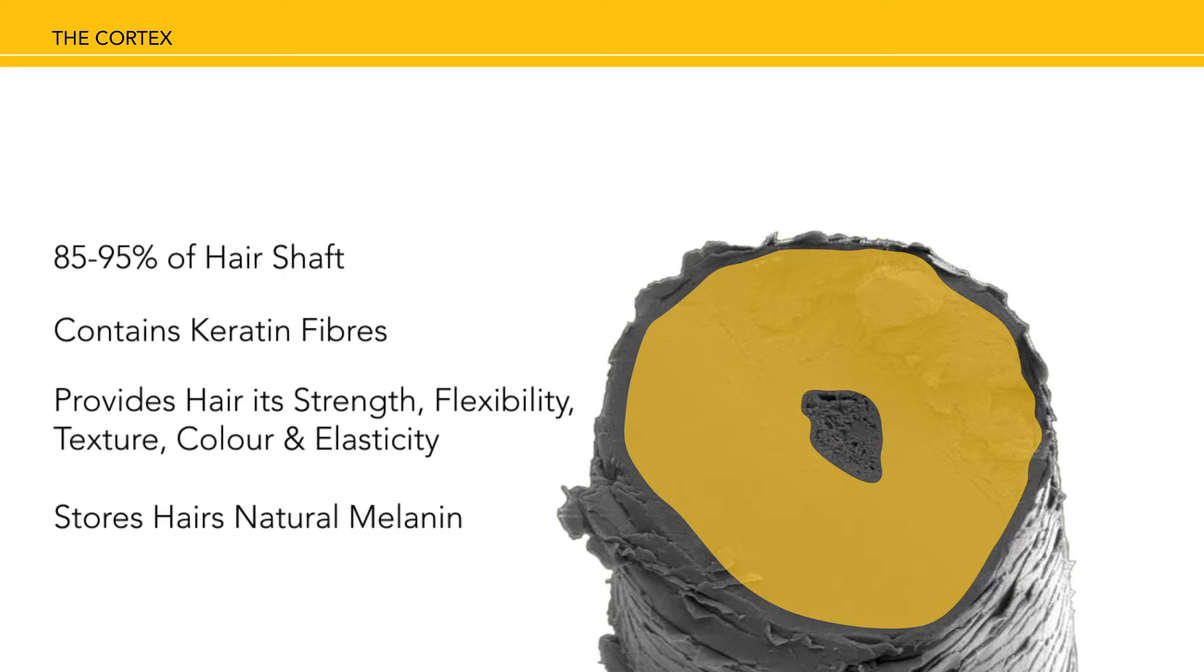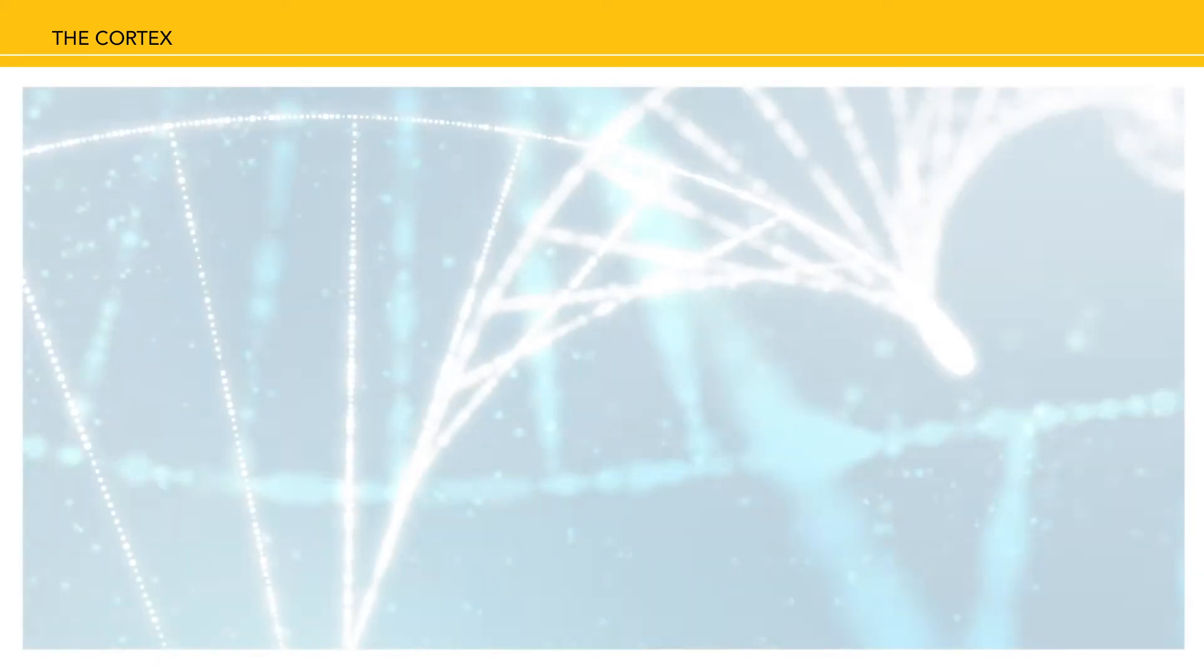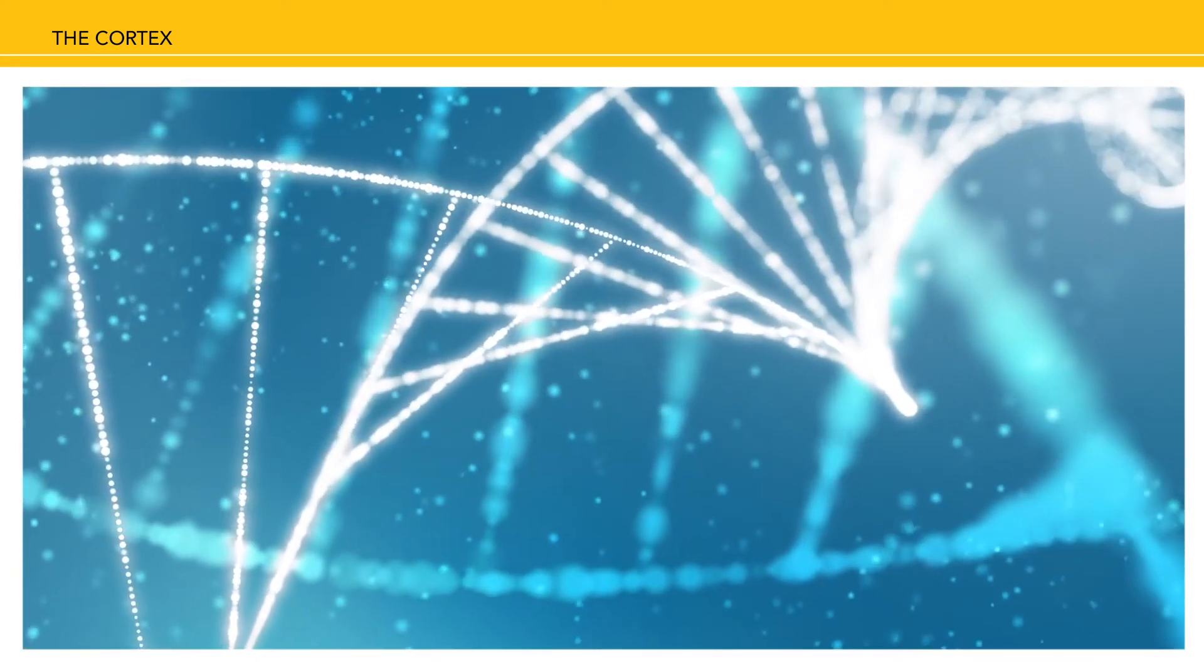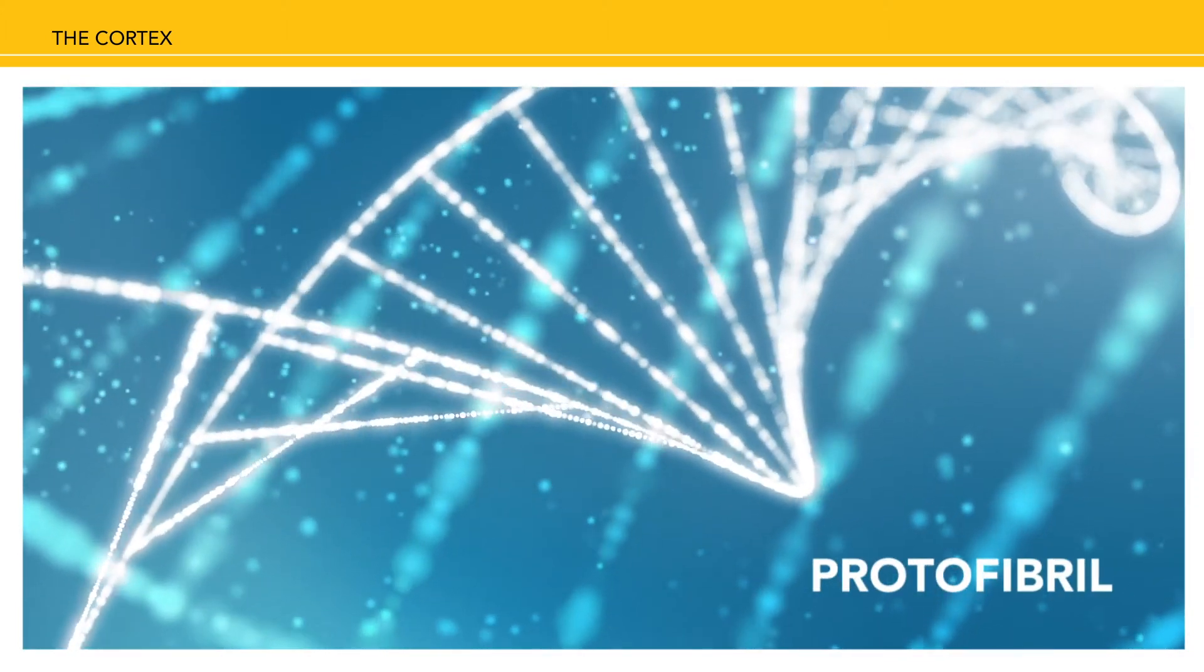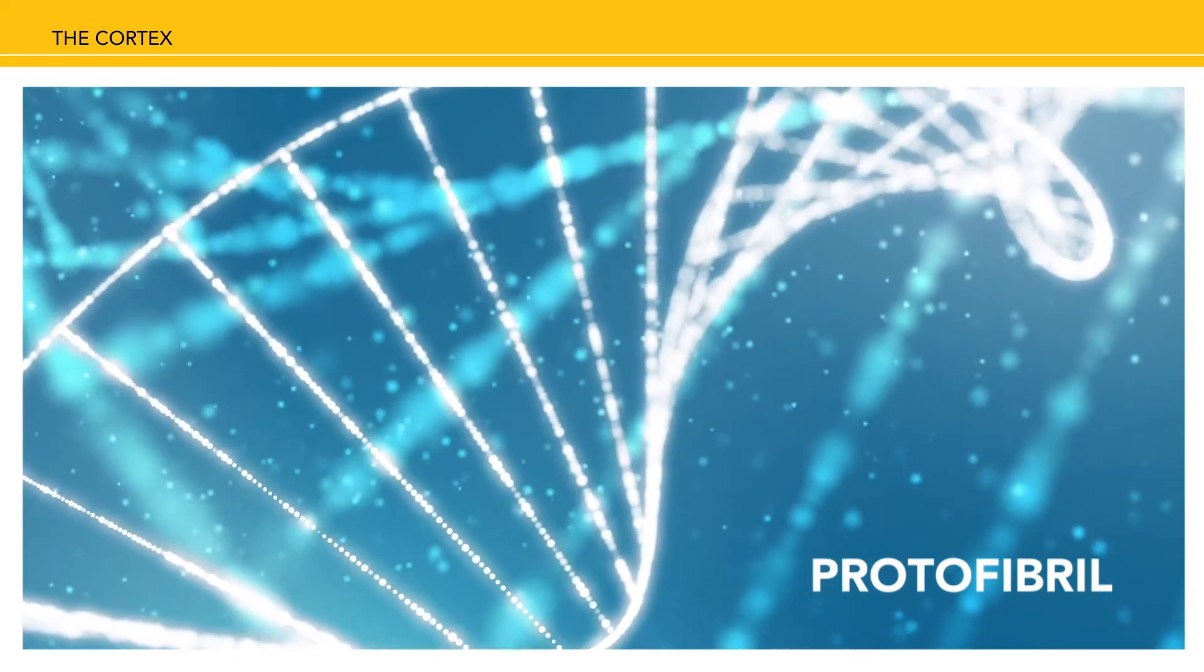The amino acids combine to form two types of protein. Helical coil proteins are spring-like structures. There are approximately three helical proteins and they form a protofibril. Protofibrils are long, spiraling, ladder-like chains.